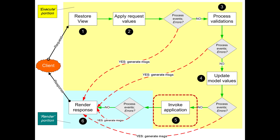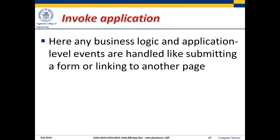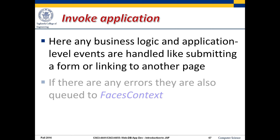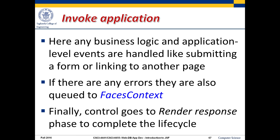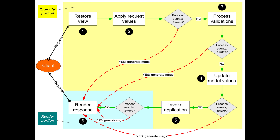Step five: invoke application. Any business logic and application-level events are handled, like submitting a form or linking to another page — this is the highest level of what the user sees. If there are any errors here, they also get queued to this object so they can be transmitted to the user. Assuming everything goes correctly, the full render response will happen and that completes the lifecycle for that particular page.